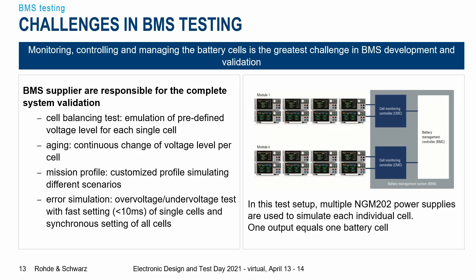There are several tests you have to perform as a BMS supplier. You need to do cell balancing tests to make sure all batteries return to the same state of charge when they vary. You need to do aging tests with continuous voltage changes on each individual cell. There are mission profiles with customized simulation of different scenarios depending on your application. And of course, there are error simulations — over-voltage and under-voltage tests — where you have to set these voltages very fast, usually within less than 10 milliseconds.